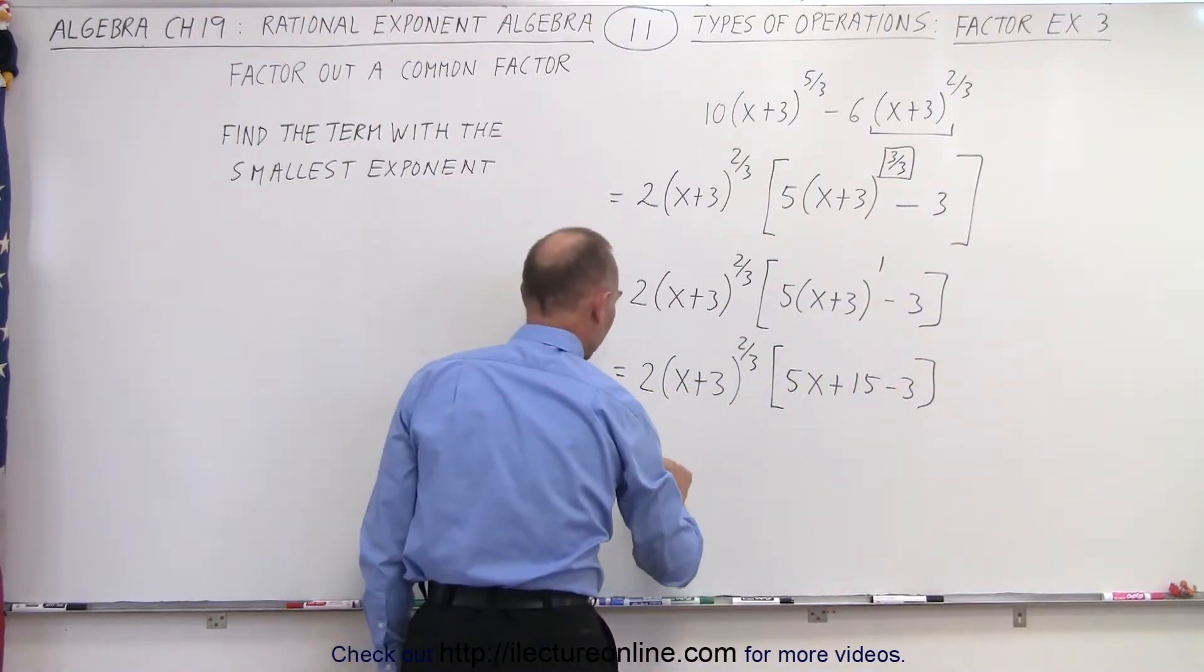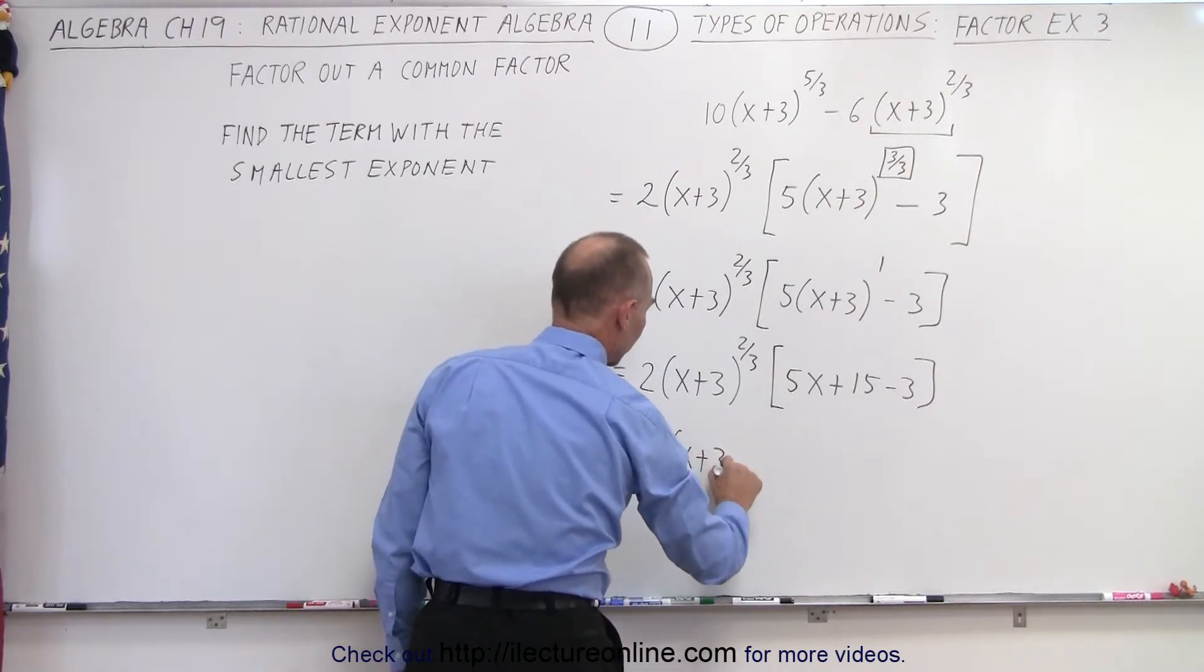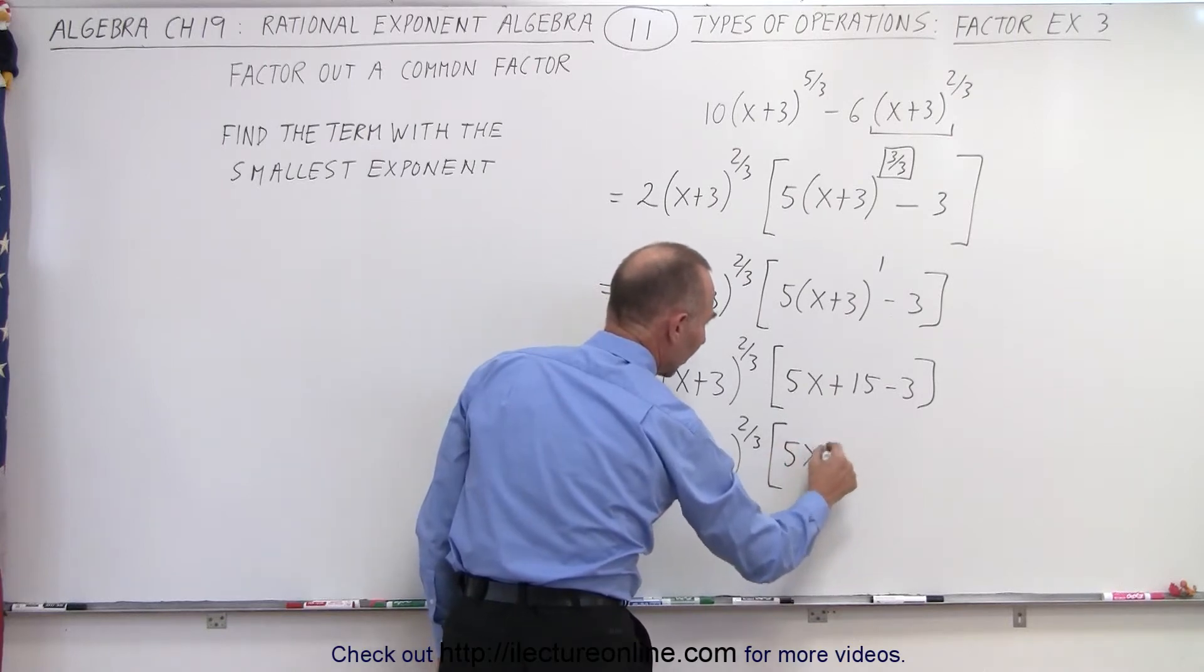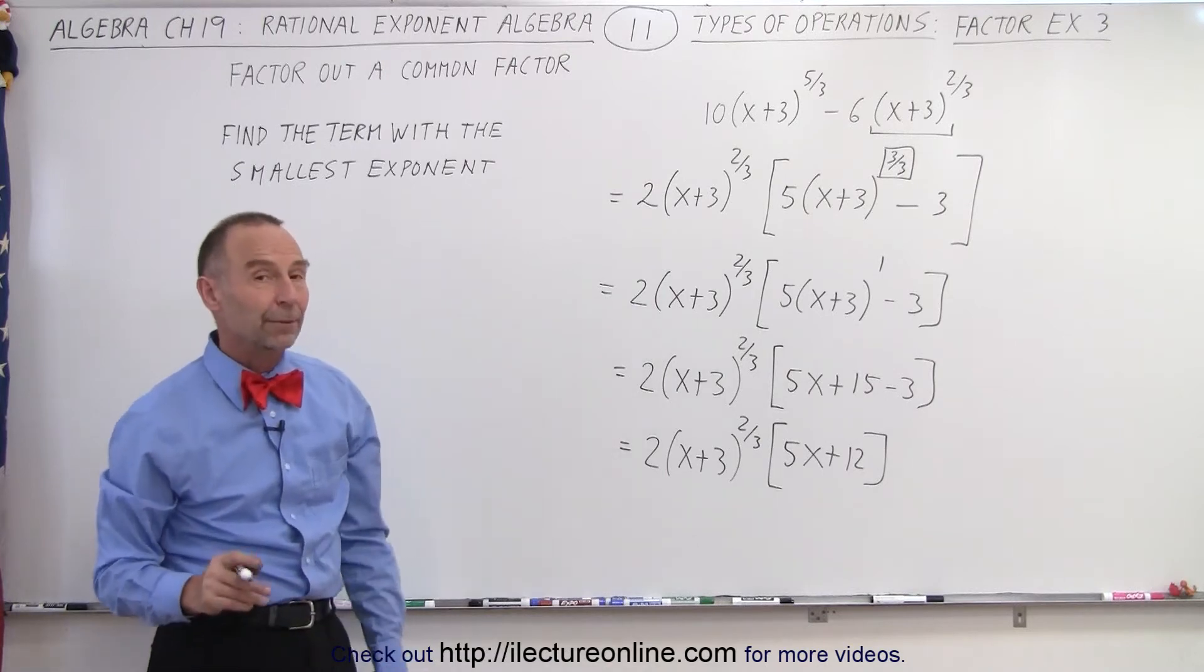So finally, this can be written as 2(x+3)^(2/3)(5x + 12). And that's the final factored form of our original problem.